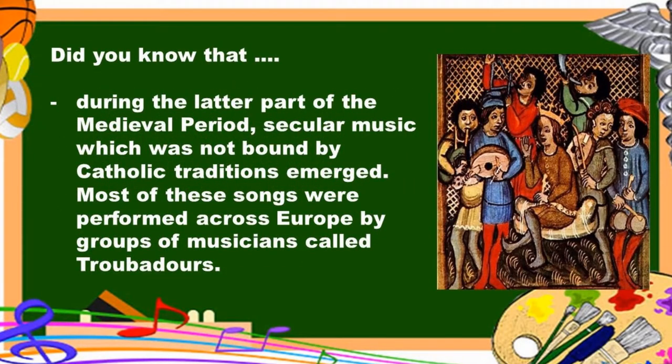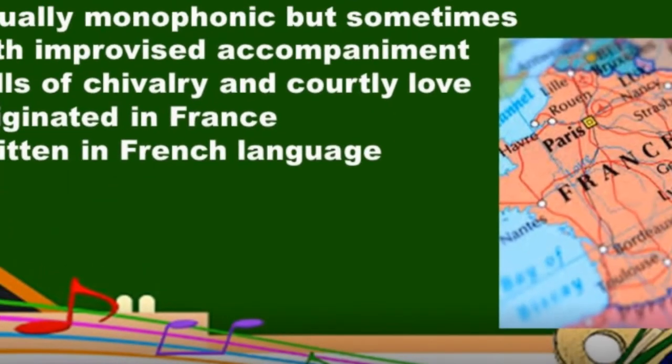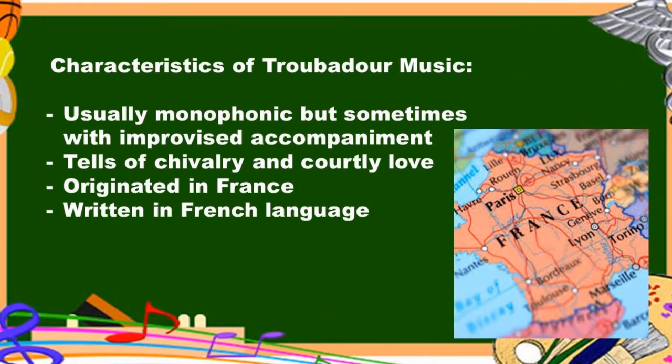During the later part of the medieval period, secular music which was not bound by Catholic traditions emerged. Most of these songs were performed across Europe by groups of musicians called troubadours. Characteristics of troubadour music: it is usually monophonic but sometimes with improvised accompaniment; it tells of chivalry and courtly love — mostly about love. Troubadour music also originated in France, which is why it is written in the French language.